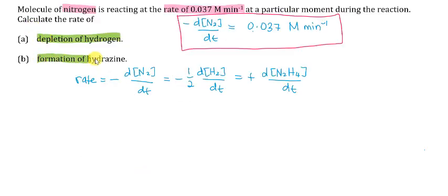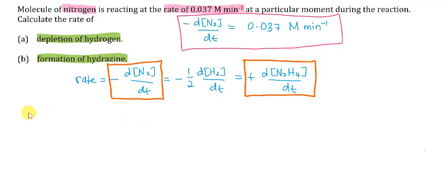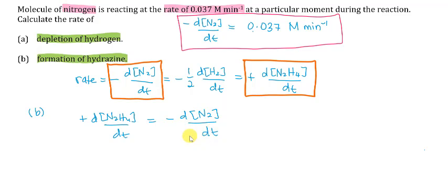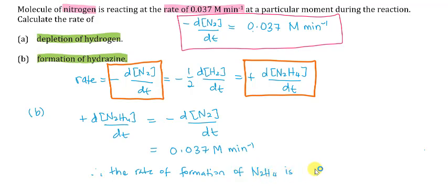For part B, calculate the rate of formation of hydrazine. Compare d[N2H4]/dt with negative d[N2]/dt. Since we already have the value of negative d[N2]/dt, substitute it: d[N2H4]/dt equals 0.037 molar per minute. The rate of formation of hydrazine is 0.037 molar per minute.